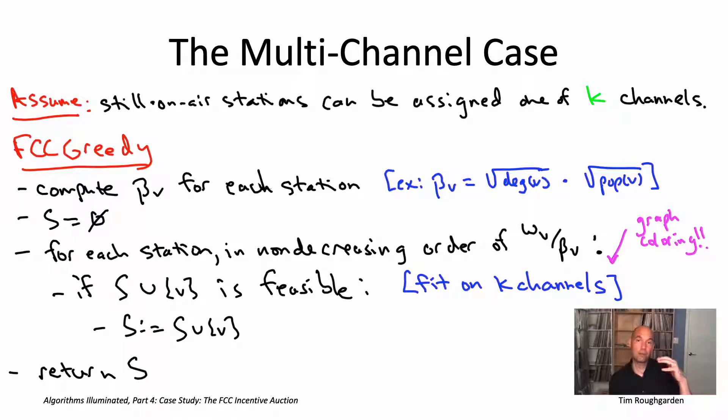Remember in the graph coloring problem, the input is an undirected graph along with a parameter K, and your job is to check if the graph is K colorable. Meaning is it possible to assign each of the vertices one of the K available colors so that each edge, so that no edge is monochromatic. Every edge has endpoints with different colors. What's the correspondence with feasibility checking in the FCC greedy algorithm? Well, the vertices are going to correspond to the stations. Edges in the graph are going to correspond to stations that would conflict if they're assigned the same channel, so stations with overlapping broadcast areas. And then the colors in the coloring problem are just going to correspond to the K available channels. So that graph is K colorable if and only if the stations that we have can all be assigned to these K channels without any interference.